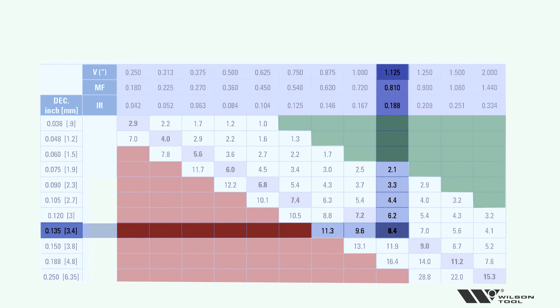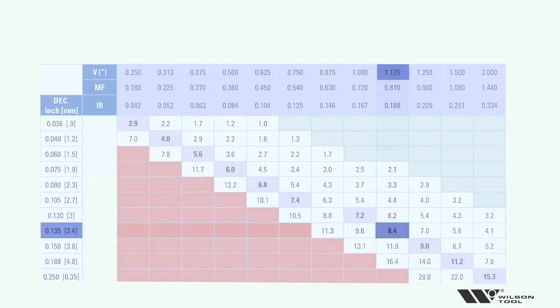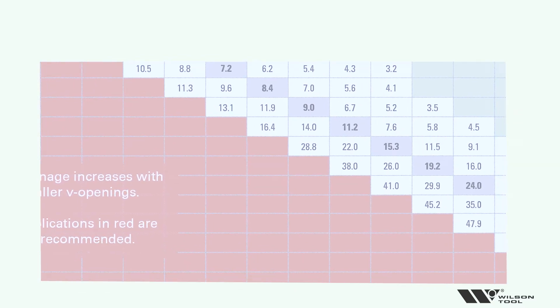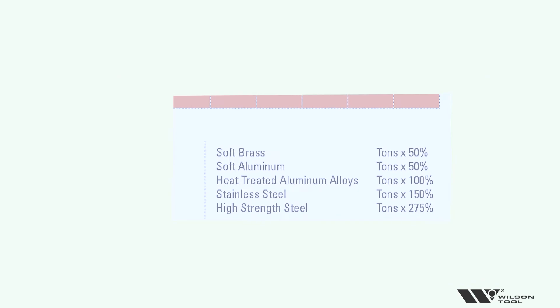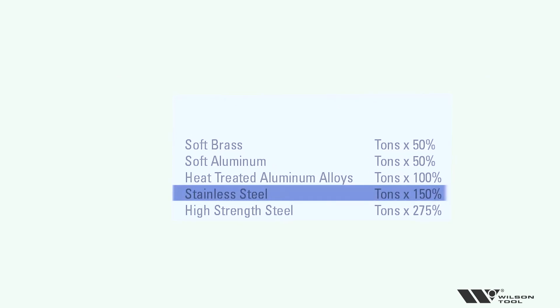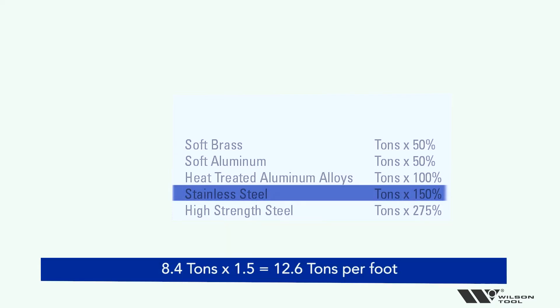So pick your V opening based on what will fit your application. And now we said this was stainless steel material. So I need to go down in the lower right hand corner of the chart, and I look through and see that stainless steel actually has a factor of 1.5. We want 150% of the tonnage being called out on the chart because it's stainless steel. So I'm going to take my 8.4 tons, multiply it by 1.5 to get 12.6 tons per foot on the application.